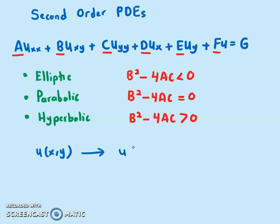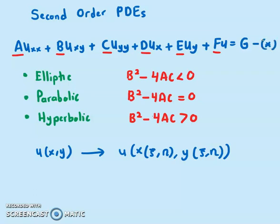We want to transform the equation by expressing X in terms of ψ and η, and Y in terms of ψ and η. I'm going to call the original equation 'equation star' and transform it to ψ and η coordinates.